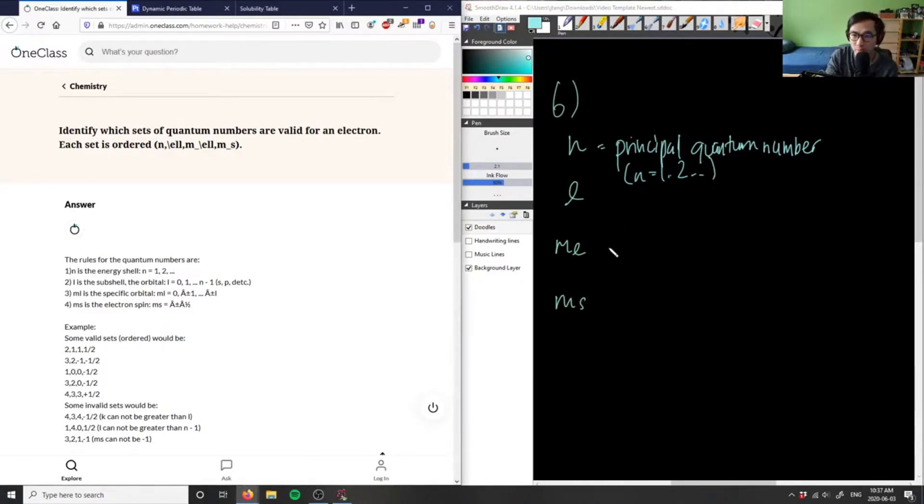l here is the orbital or the subshell slash orbital. l has to be basically from zero to one all the way up to n minus one. This determines the orbital here, so this is either s, p, d, or f orbitals.